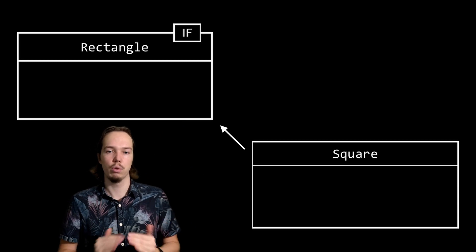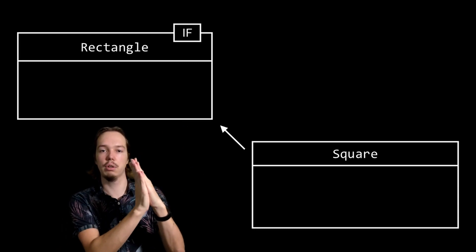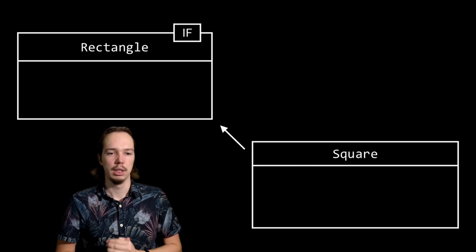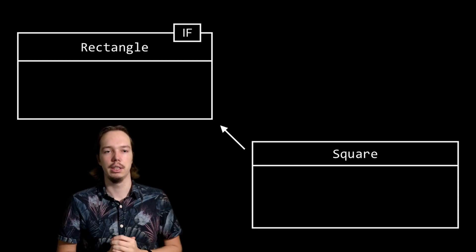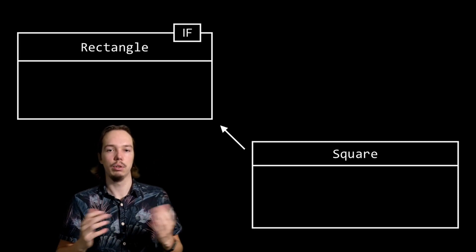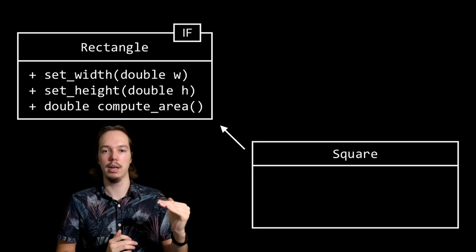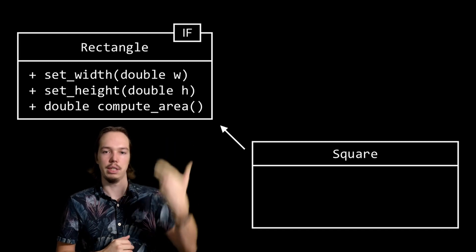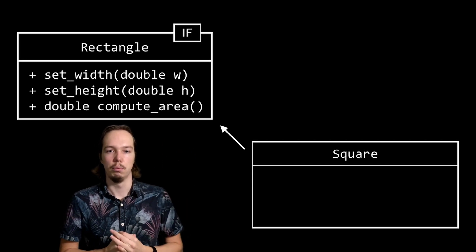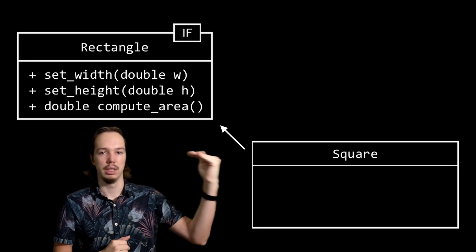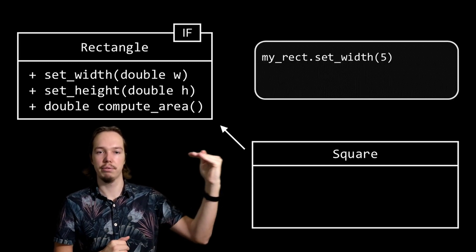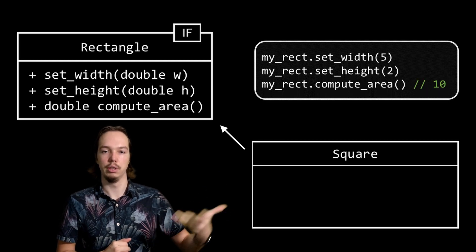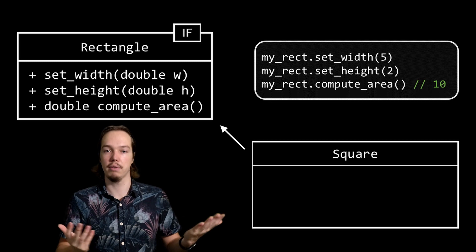Of course, depending on the functions that this rectangle interface describes, this could cause problems. For example, say our rectangle interface says that every rectangle should have a set width, set height, and a compute area function. A user interacting with this rectangle interface will expect to be able to set the width to 5, set the height to 2, and then when computing the area, get returned a 10 — 2 times 5.